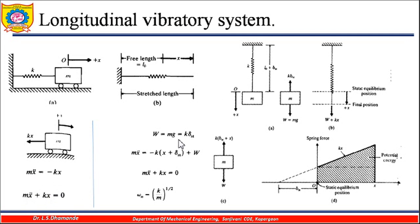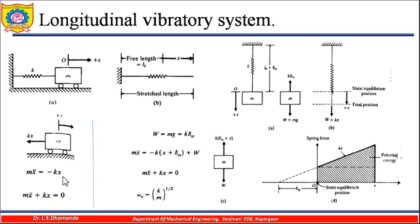In the vertical case, the weight w equals mg, which is also given by k times delta_st, where delta_st is the static deflection. Writing the total inertia force equation: it equals k times (x + delta_st) minus w, which expands to kx + k·delta_st − w. Since k·delta_st equals mg equals w, these terms cancel out. The remaining equation is m·ẍ + kx = 0, the same as the horizontal case.